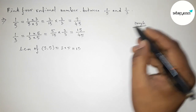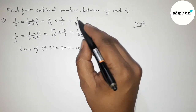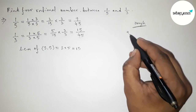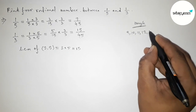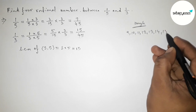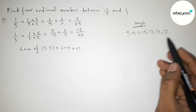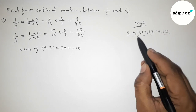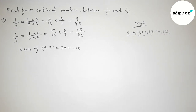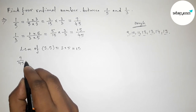Since the denominators are now equal, between 9 and 15 we can get 5 integers. But we have to take only 4 integers, so we select 4 of them. Now we can list all the rational numbers.